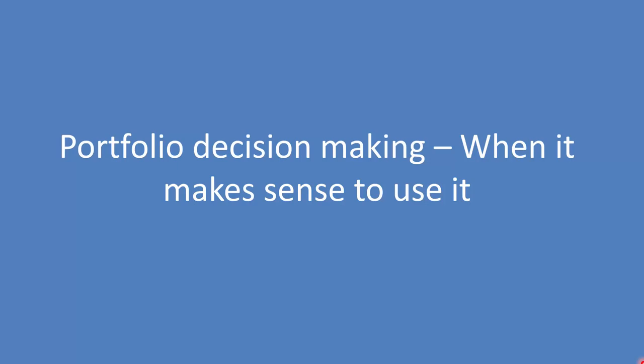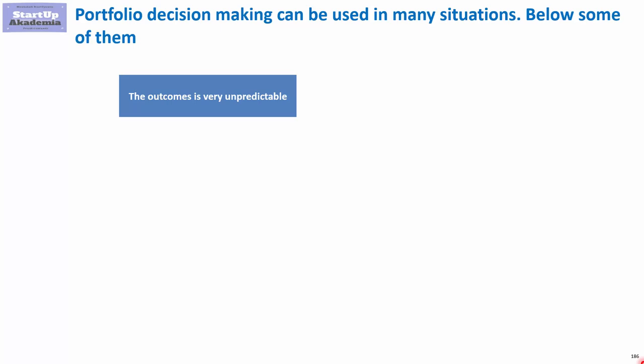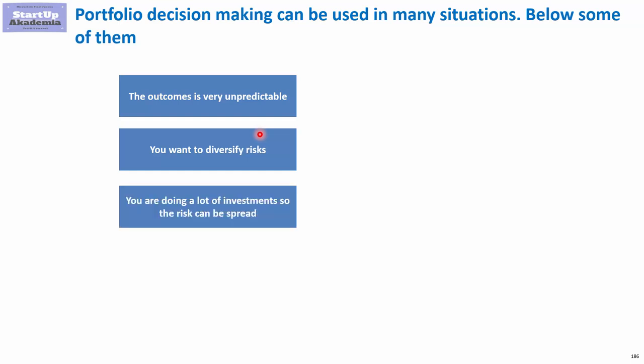Let's look at when it actually makes sense to use portfolio decision making. The first condition is that the outcome is unpredictable. The second is that we want to diversify risks — we know risks exist and cannot easily mitigate them, so we don't want to put all eggs in one basket and prefer exposure to different risks rather than one risk endangering the whole company. Portfolio decision making also requires having many investments so risk can be spread, preferably of roughly the same size.